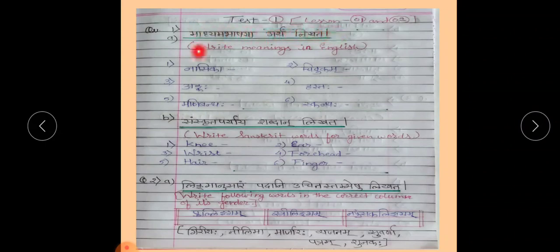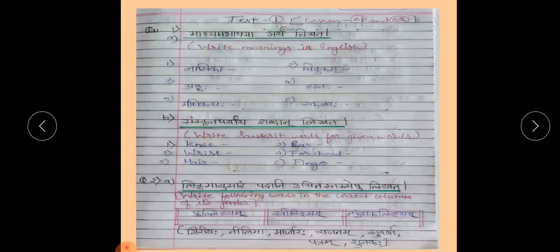The first question is: write meanings in English. You have to write the meanings of these words in English. After that, the next question is you have to write Sanskrit words for these English words.